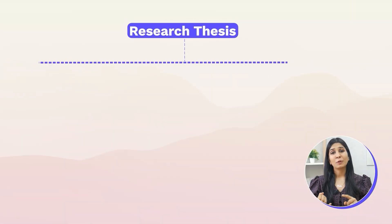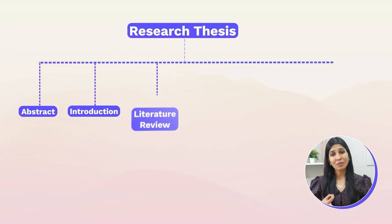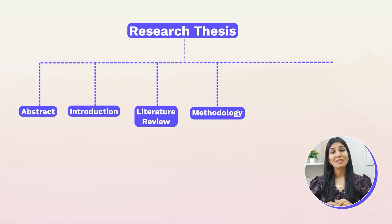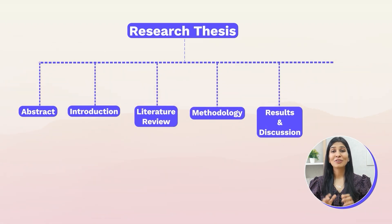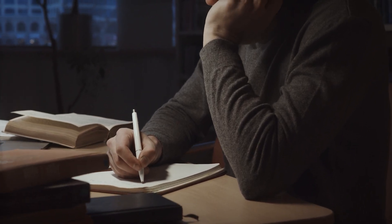After these formality sections come the main sections of your research thesis: the abstract, introduction, literature review, methodology, results and discussion, and conclusion. But before I deep dive into each of these sections and explain what information you are supposed to include, let me share with you an AI tool that can make your thesis writing much faster and efficient.